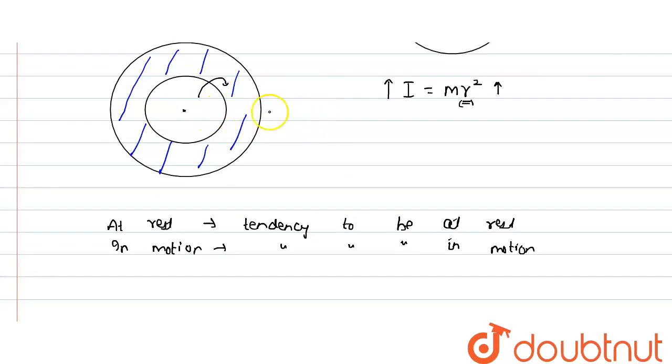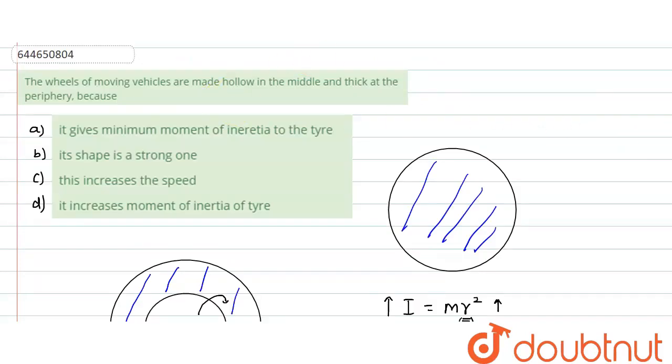For example, if we are not pedaling then also we want our bicycle to move. So how can we maintain its tendency of motion? By increasing the value of the moment of inertia. So it does not minimize moment of inertia, it increases moment of inertia. So D would be the correct option. Its shape is a strong one - it's not related to the strong shape because we can make a strong shape either way. This increases the speed? No, it has no relation with increasing speed. So it is only related with increasing moment of inertia. So D is the correct option.